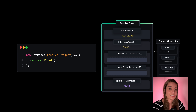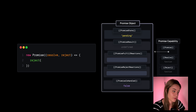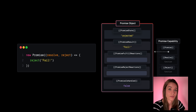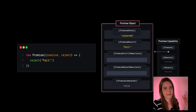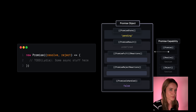Similarly, we can reject the promise by calling reject, in which case the promise state is set to rejected and the promise result is set to the value that we pass to reject — so the string 'fail'. Nothing special here; we're just calling a function to change some object property.